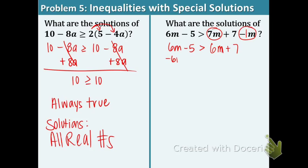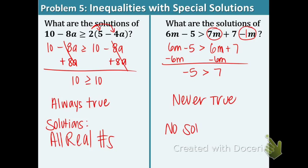Subtract 6M from both sides and you get negative 5 is greater than 7. No, it doesn't work. That's never true. So that means there is no solution for this inequality. Nothing works.